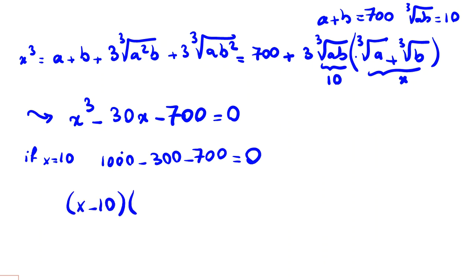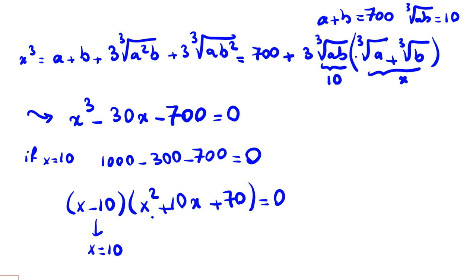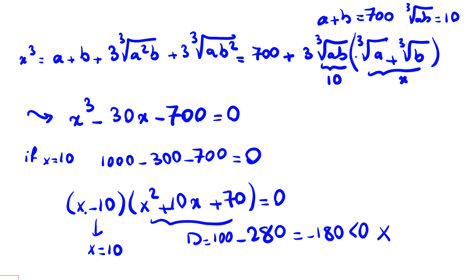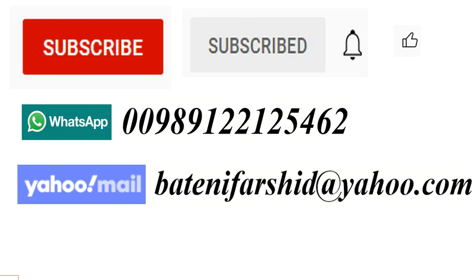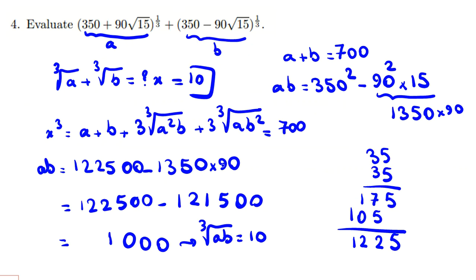Factoring out (x minus 10), we get the quadratic x squared plus 10x plus 70. The discriminant is 100 minus 4 times 70, which equals negative 180 — less than zero. So the quadratic has no real roots. Therefore, the only real answer is x equals 10. For more videos, you can subscribe to the channel and turn on the bell. There are also related problems from SMT (Stanford) and Harvard.